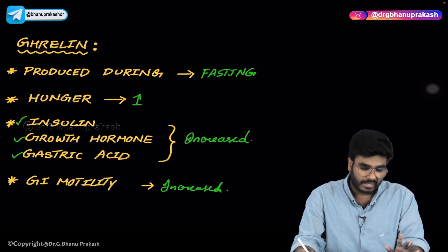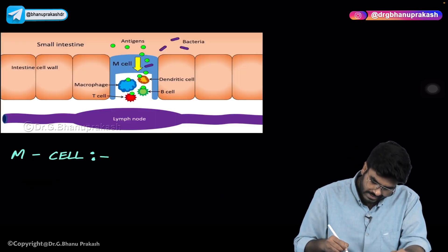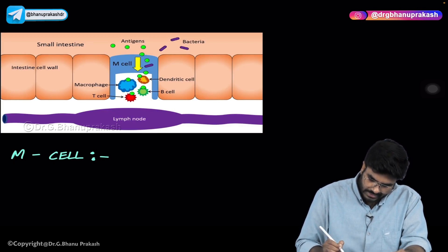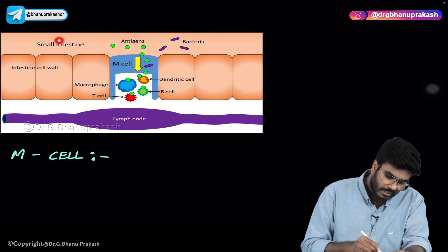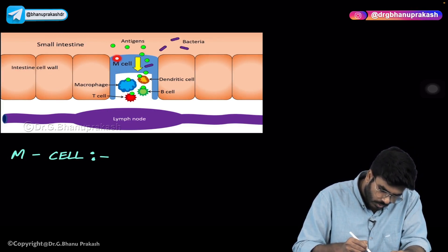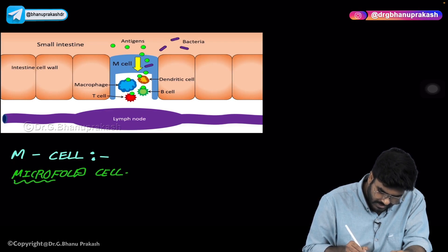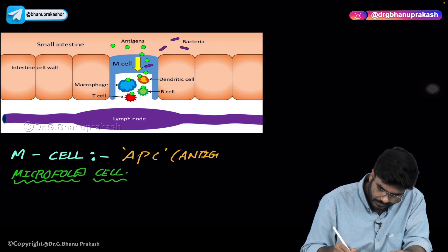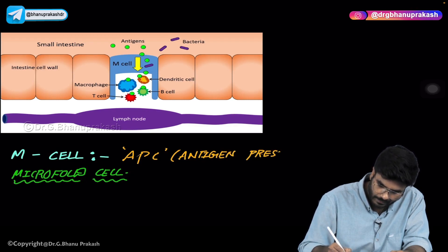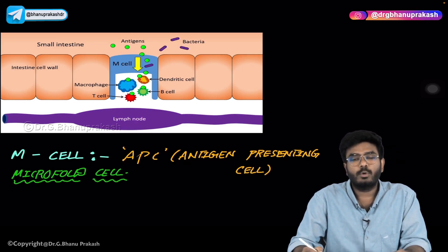One important MCQ you should never forget: ghrelin is a hormone especially produced during fasting. Now, let's talk about a cell called the M cell — this is an integration with pathology. M cells, also called microfold cells, are present in the wall of the small intestine. M cells act as antigen-presenting cells. So in the small intestine, the antigen-presenting cell is the M cell — one important MCQ to remember.